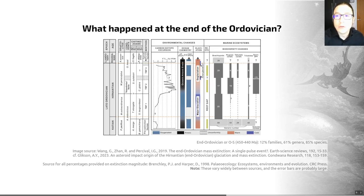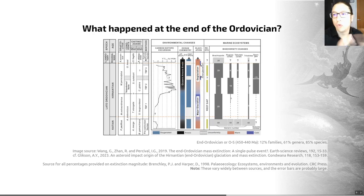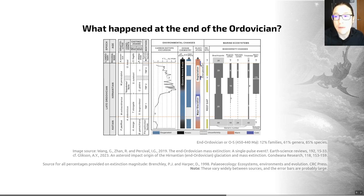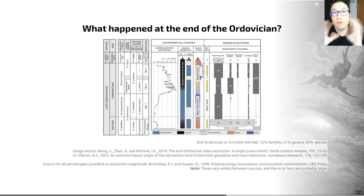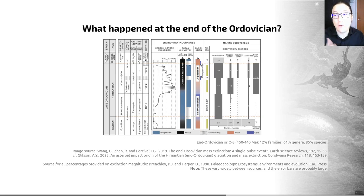The possible cause of this extinction was the paleogeography of this time period — the configuration of the continents in the Ordovician Earth — and subsequent and associated climate change. At the time, we had Gondwana, one of the big continents, in the south, around the South Pole. This southern continent had drifted over the South Pole, and this led to a severe and sudden glaciation called the Hernantian Glacial Maximum.